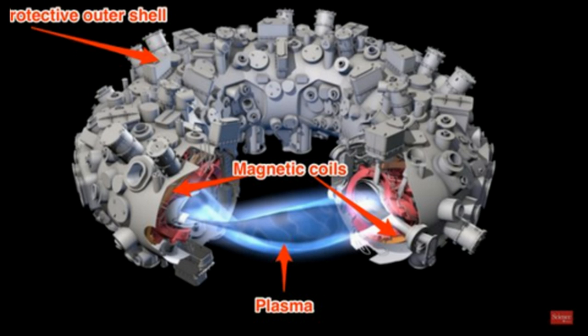Now, tokamaks have been considered to be the most promising machine for producing energy in this way, in the way that the sun does, for the longest time because of the magnetic coils that it contains. But with these tokamaks, they can only control the plasma in short bursts that usually last no longer than seven minutes.